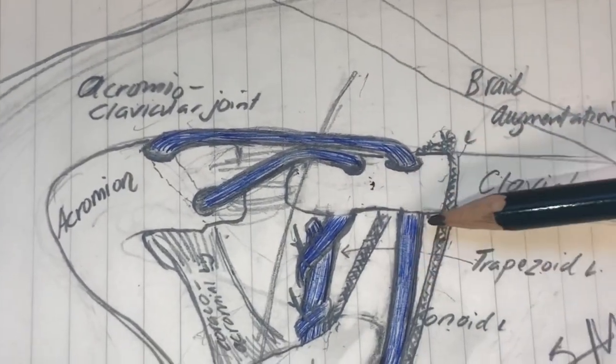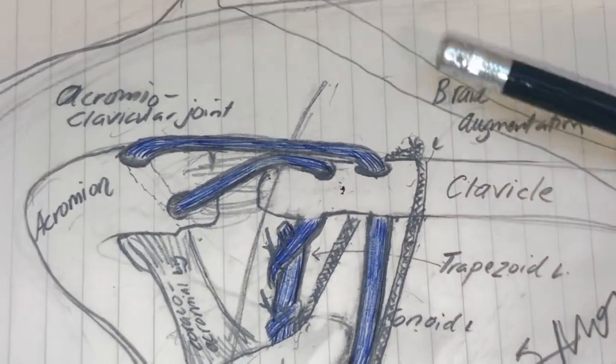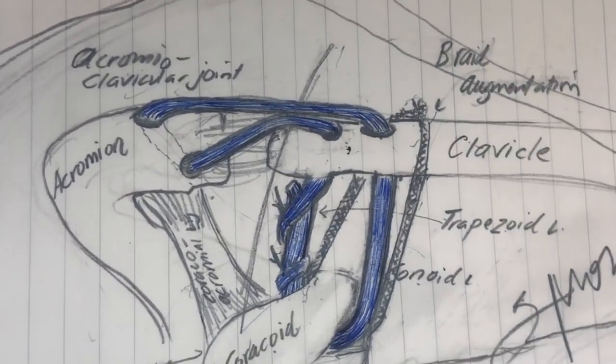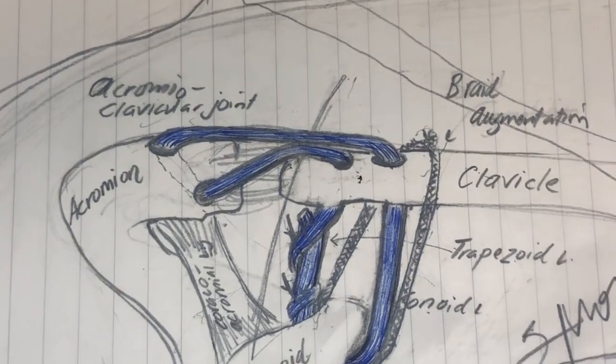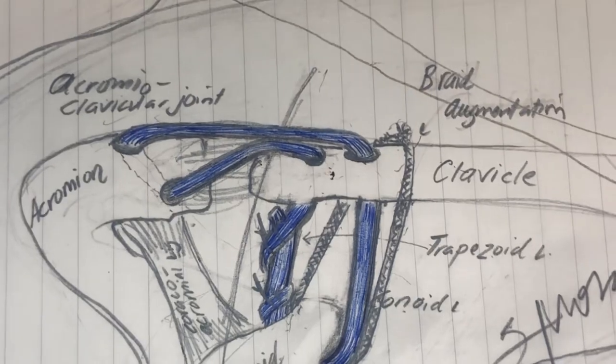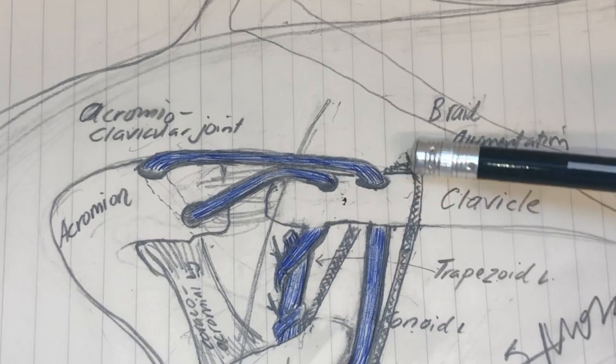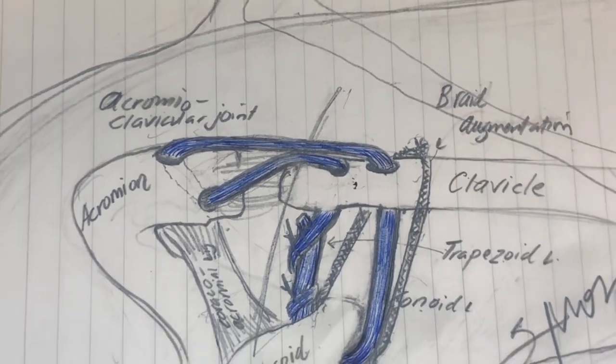So this is an anatomic AC joint reconstruction used for type five high grade separations. It's an open procedure. The patient is placed in an arm sling for a few weeks and then allowed to move and use the arm gently. I don't want them to do too much because I don't want them to tear or to stretch or to damage this repair.